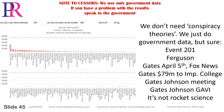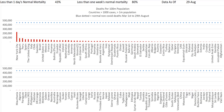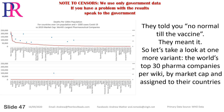We don't need conspiracy theories; we just do government data. But sure — Event 201, Ferguson, Gates April 5th, Fox News, Gates 79 million to Imperial College, Gates-Johnson meeting, Gates-Johnson-Gabby. It's not rocket science. They told you no normal till the vaccine. They meant it.